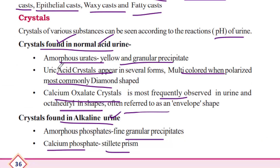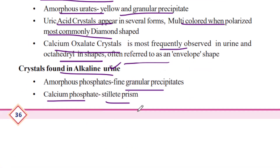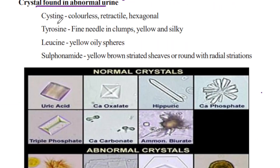The pH being acid or alkaline determines the type of crystals found in urine. These crystals can be classified as normal acid urine crystals, normal alkaline urine crystals, or abnormal urinary crystals.